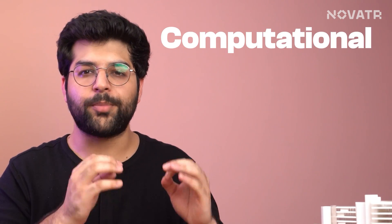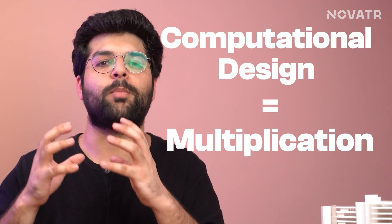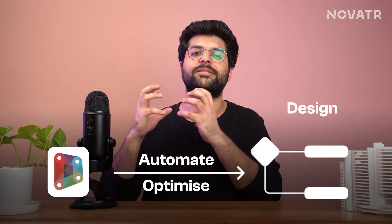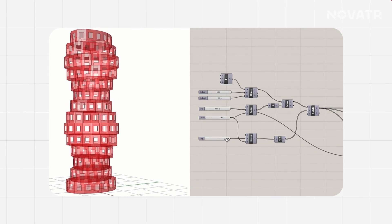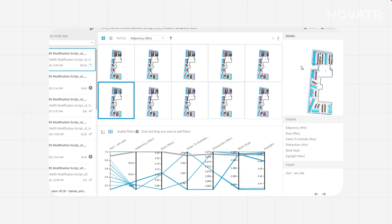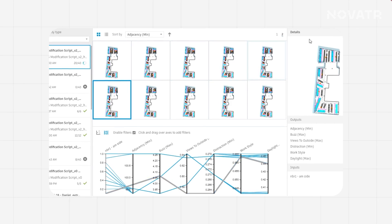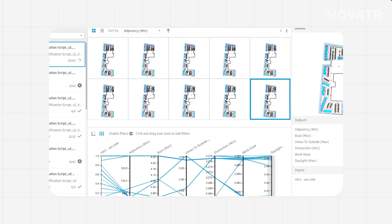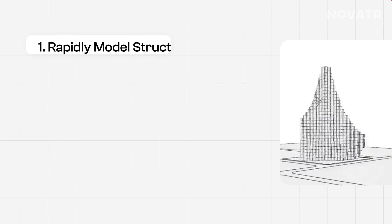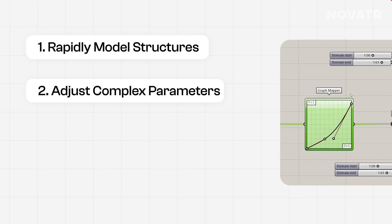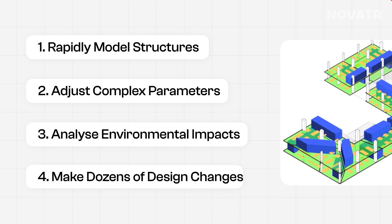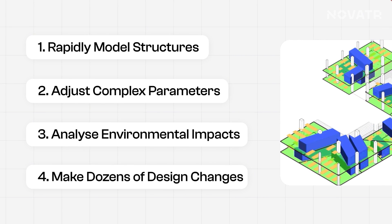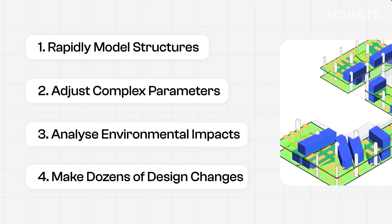On the other hand, computational design is like learning to multiply. It uses tools to automate and optimize the design process. CD uses algorithms, computer simulations, and parametric modeling to go through hundreds of design possibilities in just seconds. It means that with CD, architects have the tools to rapidly model structures, adjust complex parameters, analyze environmental impacts, and make dozens of design changes in just a blink — and that too without sacrificing accuracy.